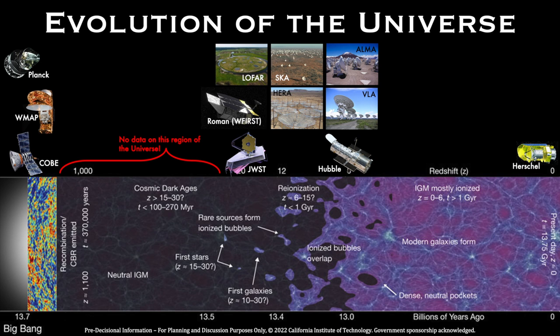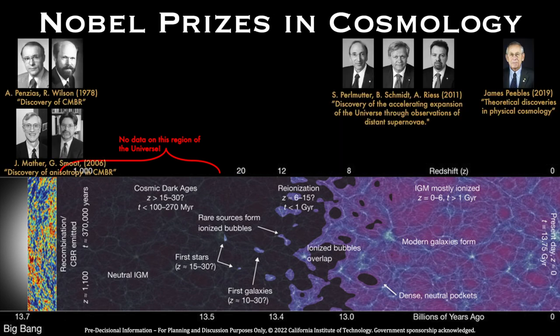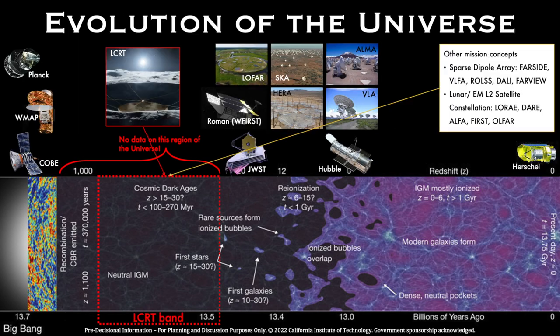cosmic dawn, and re-ionization phases of the evolution of the universe. The region of the universe that we have been able to observe has resulted in a number of Nobel Prizes and Gruber Prizes in cosmology. I believe Nobel Prize-worthy science is waiting to be discovered in this unobserved region of the universe. LCRT will observe this unobserved region of the universe.